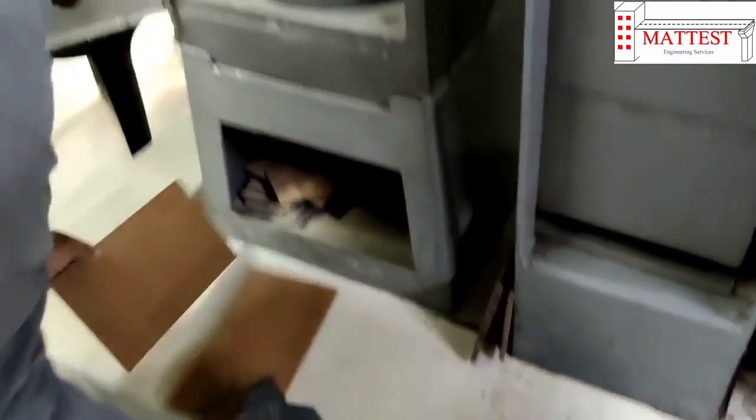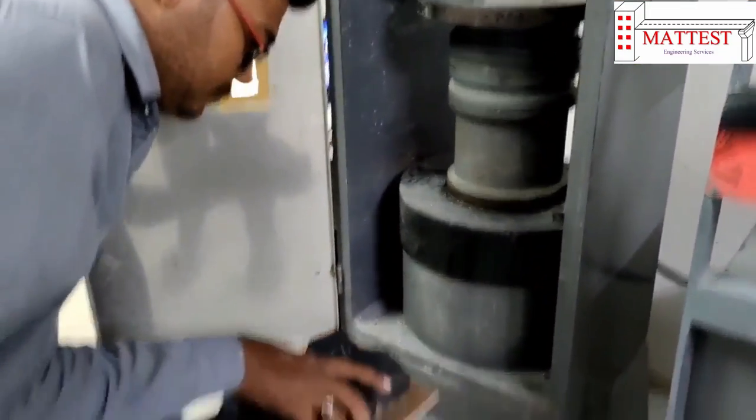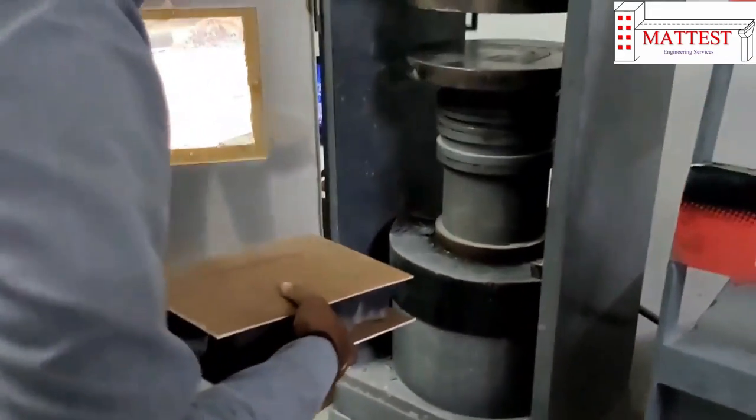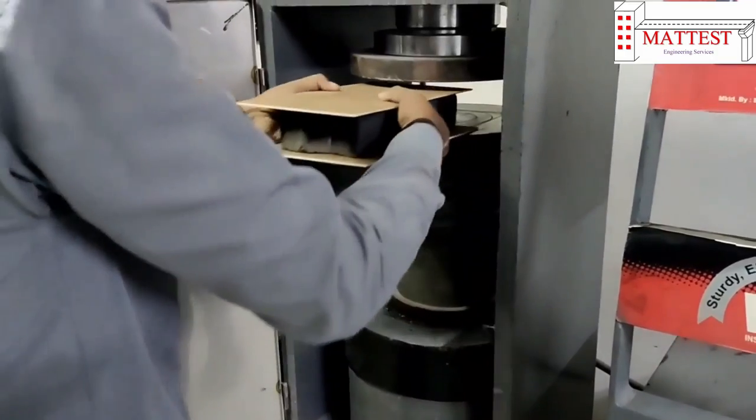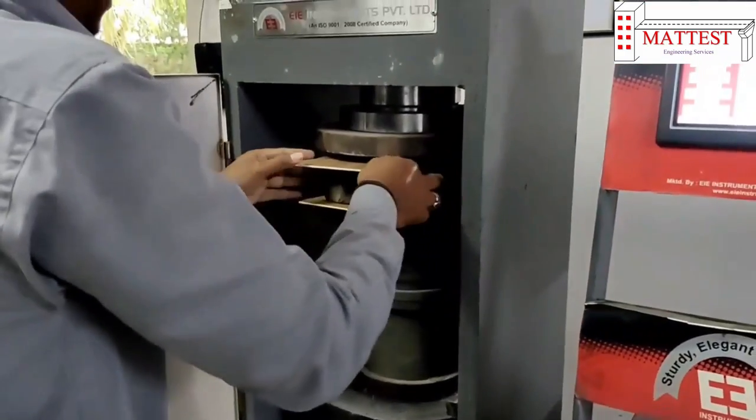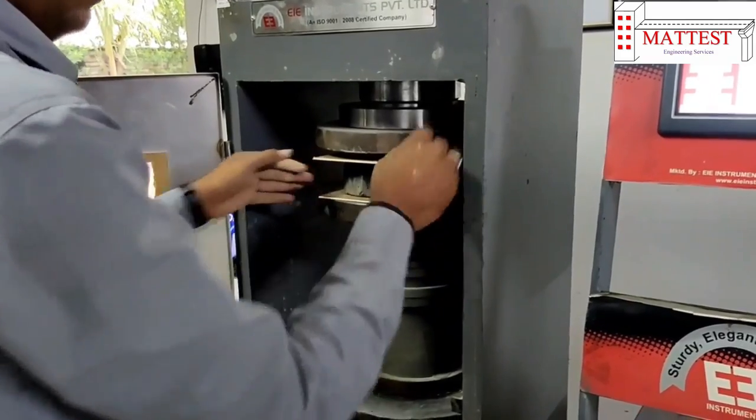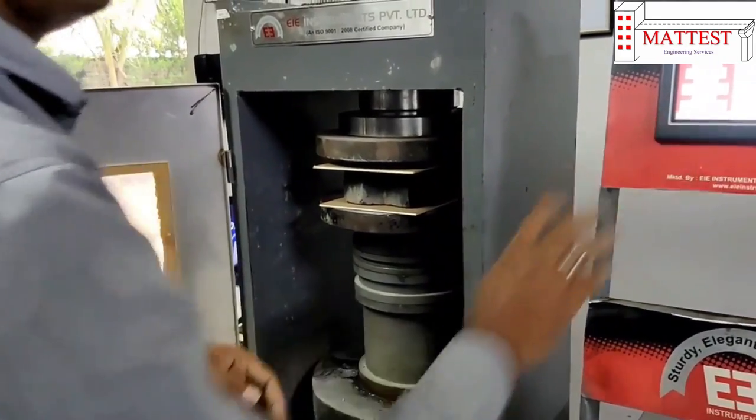Step 3: Now take the specimen and place it into the compression testing machine between two 4mm wooden plywood sheets. Now start the compression testing machine.